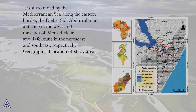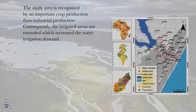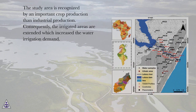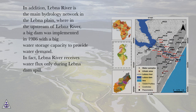The study area is recognized by important crop production over industrial production. Consequently, the irrigated areas are extensive, which increases the water irrigation demand. In addition, Lebna River is the main hydrological network in the Lebna Plain, where upstream of Lebna River,